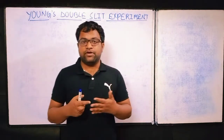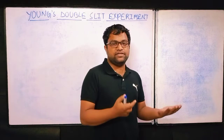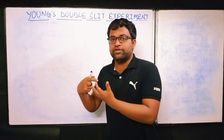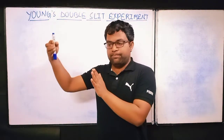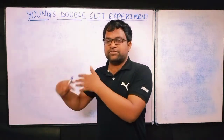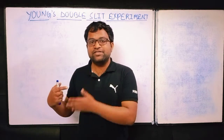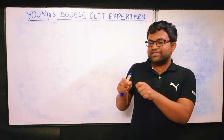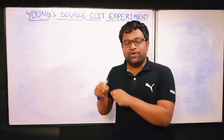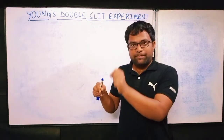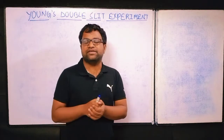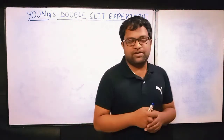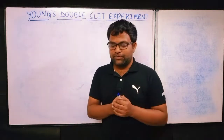This confused many scientists. They started thinking that light behaves according to the situation. When it strikes a metallic plate, it exhibits photoelectric characteristics — behaving like a particle. When it passes through a narrow gap or small aperture, it behaves like a wave. This duality is quite interesting and prompted a lot of research.